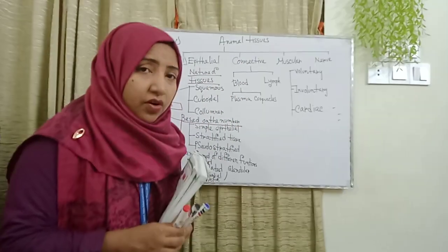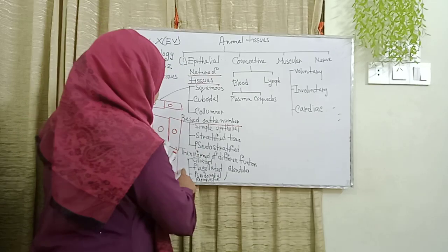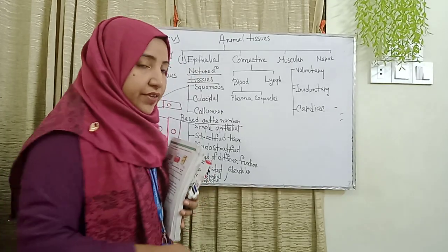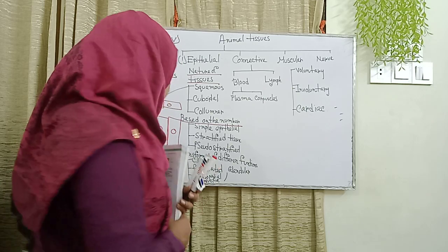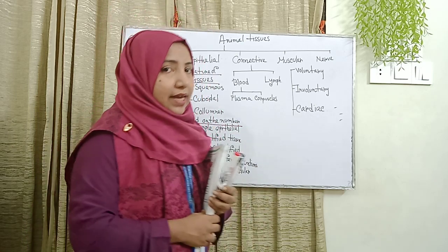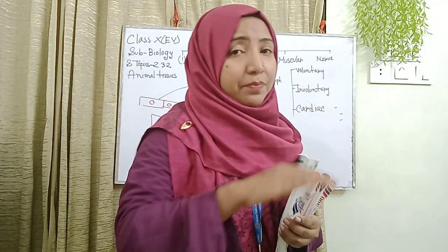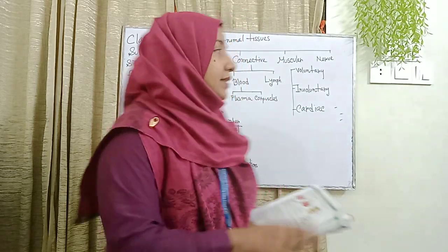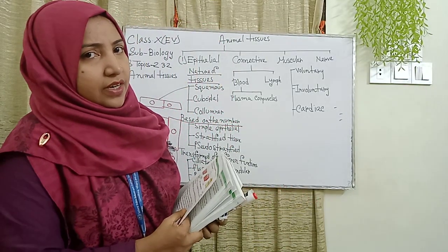Based on their specialized functions, epithelial tissues are of five types: ciliated epithelial tissue, transitional epithelial tissue, pseudopodial epithelial tissue, reproductive epithelial tissue, and glandular epithelial tissue. To summarize our first tissue: epithelial tissue is also known as the base or lining tissue. Our second animal tissue is connective tissue.